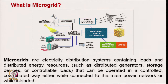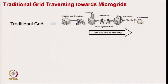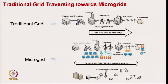This is typically the concept of microgrid. Microgrids are electrically distributed systems containing loads, distributed energy sources such as distributed generators, storage devices, and controllable loads that can be operated in a controlled, coordinated way either while connected to the main power network or while islanded.